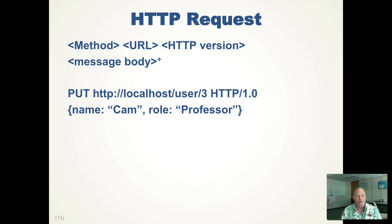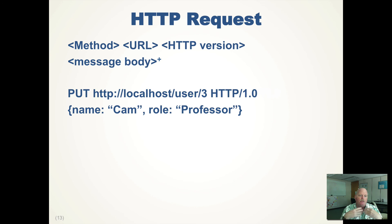Or we could say: PUT HTTP localhost user three, still talking HTTP 1.0, but our body is now the information we're requesting the server use. So we provide the message body as a JSON string — name: cam, role: professor.